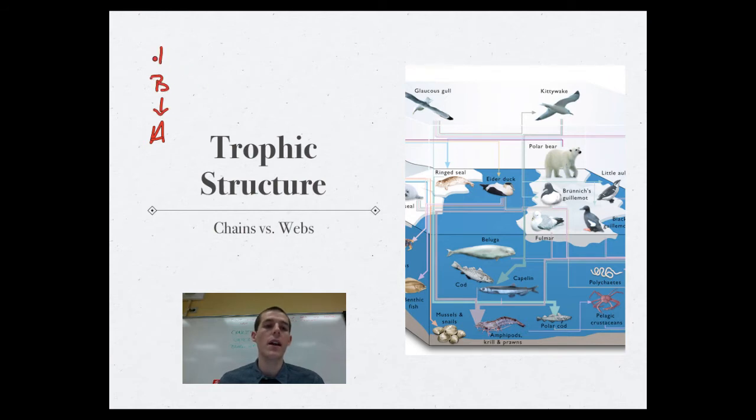eaten by a secondary consumer, which is C, and so on in a very linear fashion where energy is flowing up the chain in this direction. So, energy made in the producer level is passed off to species B, which passes it off to species C.